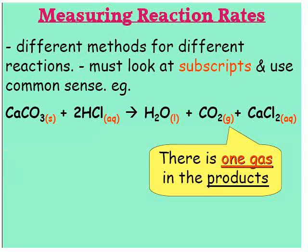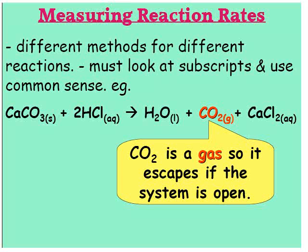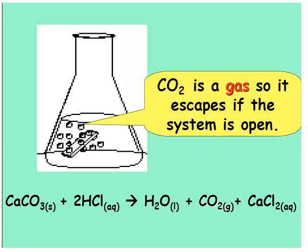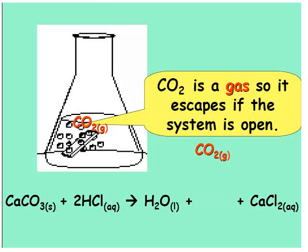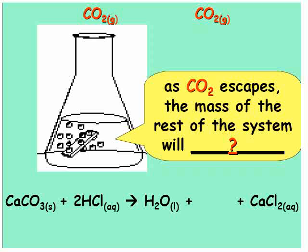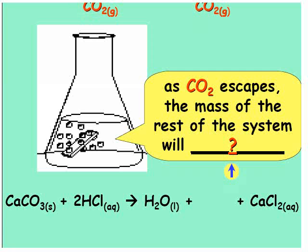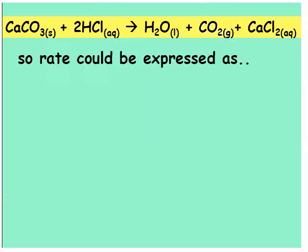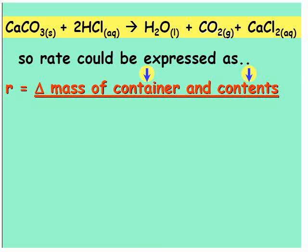But there is one gas in the products. CO2 is a gas, so it escapes if the system is open. As the CO2 escapes, the mass of the rest of the system decreases. So the rate could be expressed as R equals the change in mass of the container and contents over the change in time.